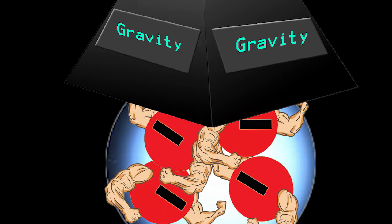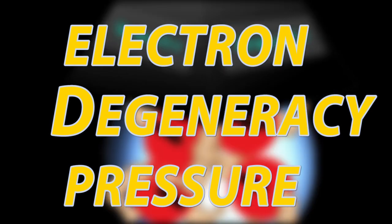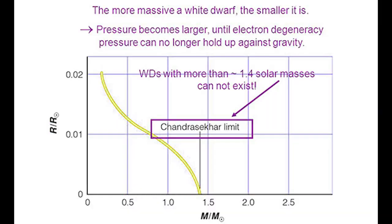So when electrons are being compressed, they try to resist this compression, which produces an outward pressure. This is called the electron degeneracy pressure. This is what keeps the star from collapsing.